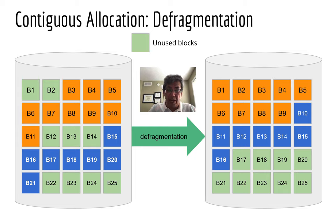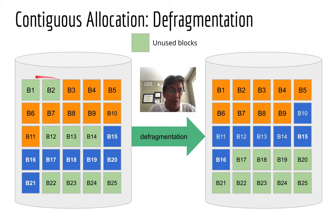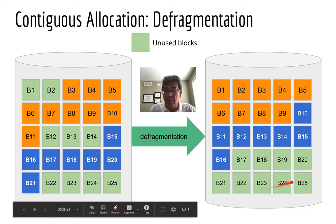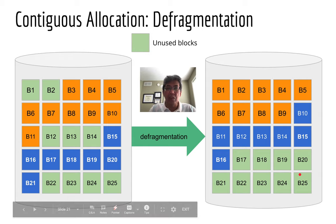Defragmentation is a process to move your files so they stay towards the beginning of your drive. We have to move the first block of the first file from B3 to B1, B4 to B2, and so on. Then we move the first block of the blue file immediately after the end of the orange file. After defragmentation, the layout of your disk blocks will look compacted, and at the end of your drive we will find nine contiguous free blocks, allowing you to allocate a new file of up to nine blocks.